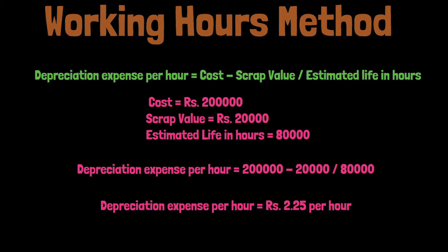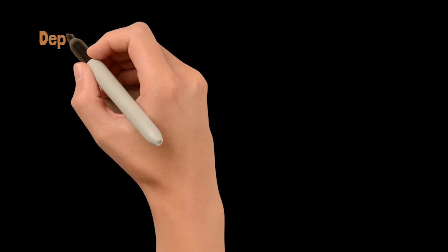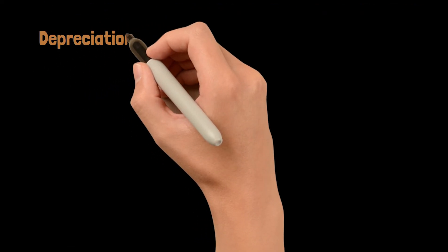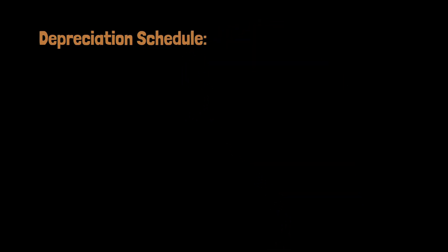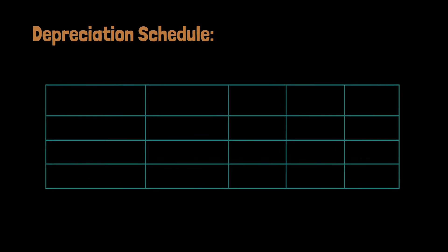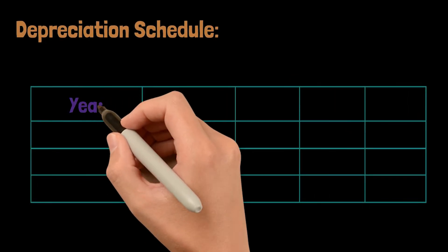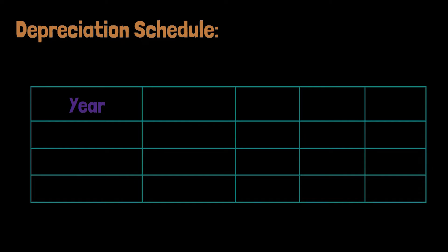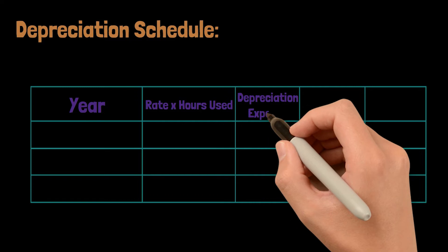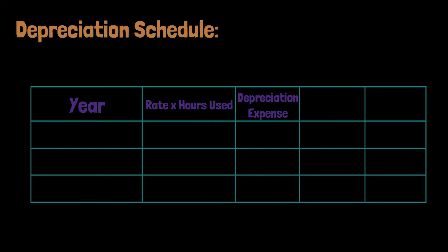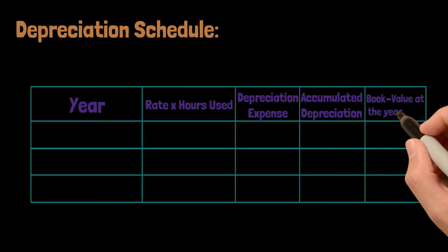This is the depreciation expense per hour, which is Rs. 2.25 per hour. To charge annual depreciation, we prepare a depreciation schedule with columns for: year, rate multiplied by hours used, depreciation expense, accumulated depreciation, and book value.